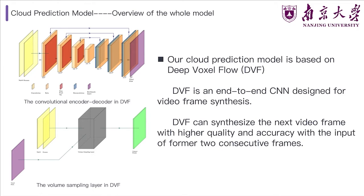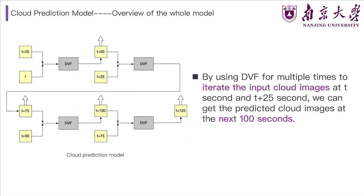Instead of using CNN to predict and output the optical flow itself, the voxel flow vector across space and time in the input cloud images is used to form an intermediate layer in DVF, which means the correctness of the optical flow prediction is never directly tested. The output of DVF is a predicted frame, and we only have to directly consider the correctness of the predicted frame. Because of the superiority of DVF in the video prediction task, we adopt DVF to our prediction model. By using DVF multiple times to iterate the input cloud images at t seconds and t plus 25 seconds, we can get the predicted cloud frames during the next 100 seconds.